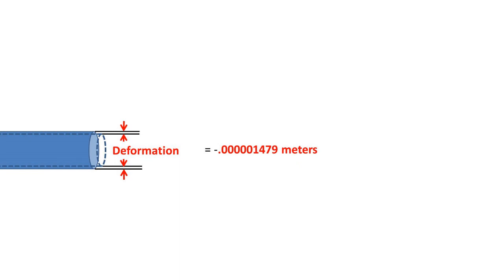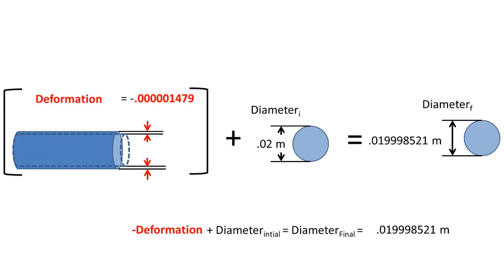We get a total deformation of 0.001479 millimeters. We can take the total deformation of the diameter and add it to the initial diameter to get the final diameter. We get a final diameter of 0.019998521 meters.